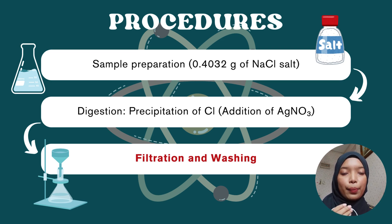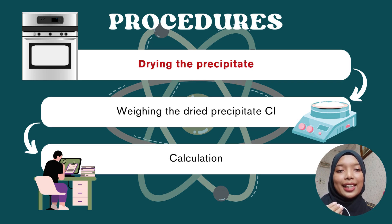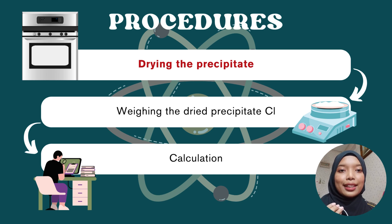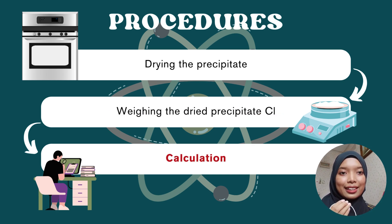The precipitate was also washed with 3 portions of 5 ml acetone to ensure its purity. After sample preparation, digestion, filtration, and washing, the wet precipitate in the filter paper is brought to a 110 degrees Celsius oven for drying. After 30 minutes in the oven, the solidified precipitate is allowed to cool for 5 minutes, then weighed with an analytical balance.